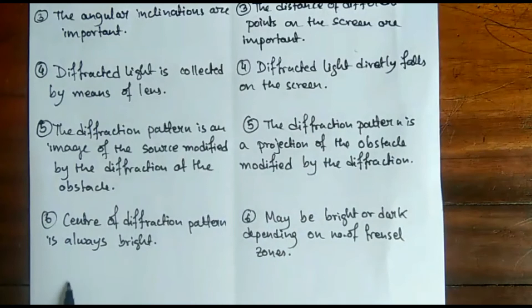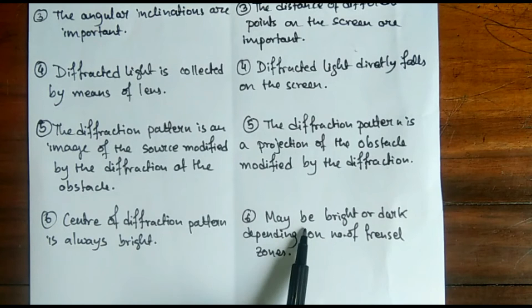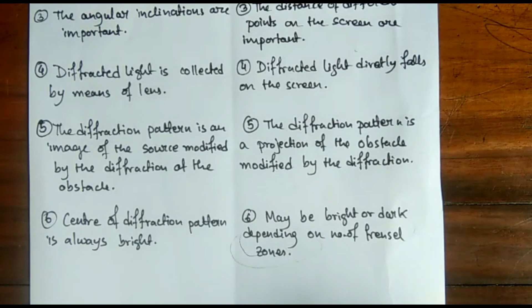For Fraunhofer diffraction, the center of the diffraction pattern is always bright, because whether it is a single slit, multiple slits, or any number of slits, the center of diffraction is always bright. But for Fresnel diffraction, the center may be bright or dark depending on the number of Fresnel zones — that is, the path through which light passes through the obstacle and forms a diffraction pattern on the screen. We will discuss Fresnel zones in the next video.